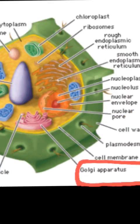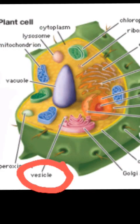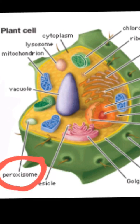Golgi apparatus sorts and packages macromolecules. Vesicle is purposed to transfer molecules, regulate, and digest materials. Peroxisome is purposed for specific biomolecule oxidation.